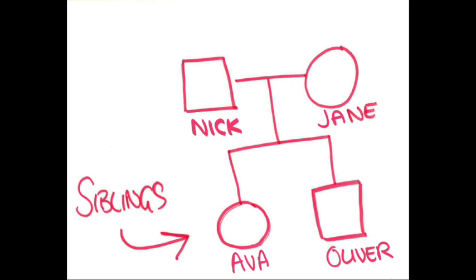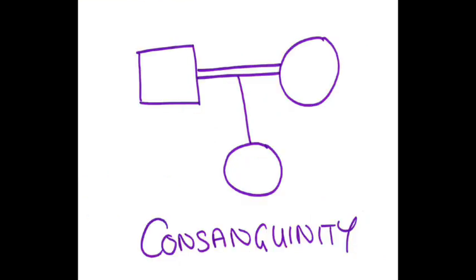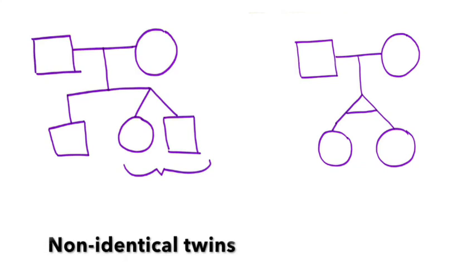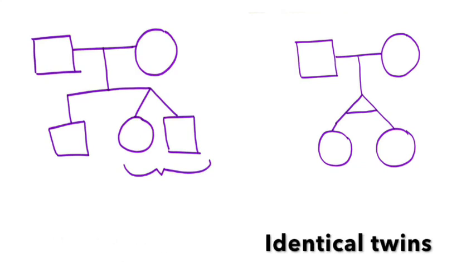We map out relationships by drawing lines between the symbols. A horizontal line indicates that a couple are in a relationship, and vertical lines connect parents to children and connect generations. A double line between a couple indicates that they're in a consanguineous relationship, meaning that they're related both by blood and by marriage. Twins are shown like this, and identical twins are joined by an extra line.